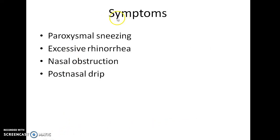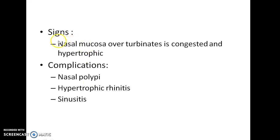Now, what are the symptoms of vasomotor rhinitis? Paroxysmal sneezing, excessive rhinorrhea, nasal obstruction, and post-nasal drip are the chief symptoms. As for signs, the nasal mucosa or turbinates are congested and hypertrophic.